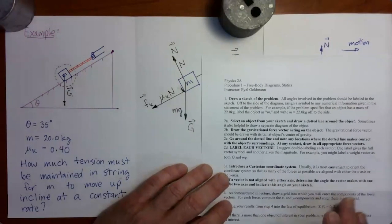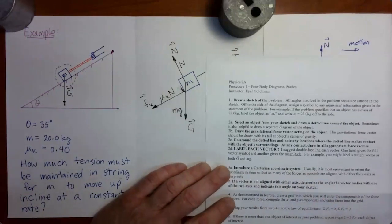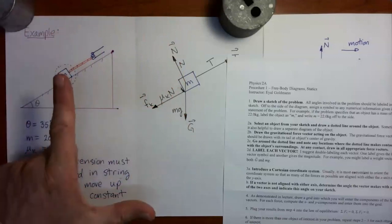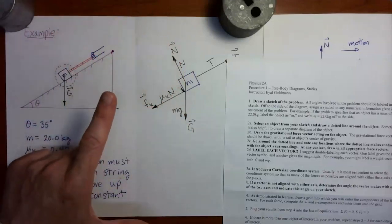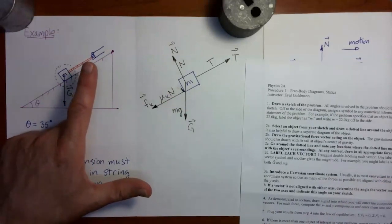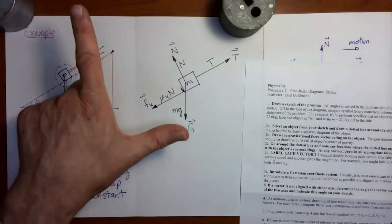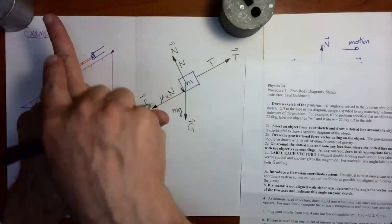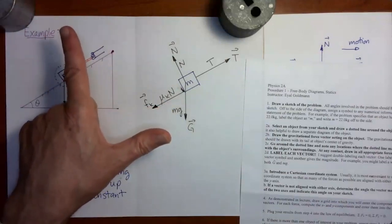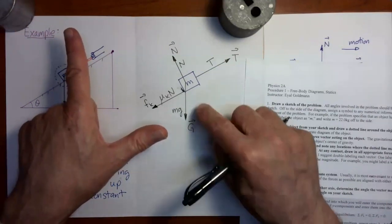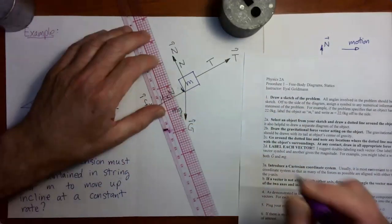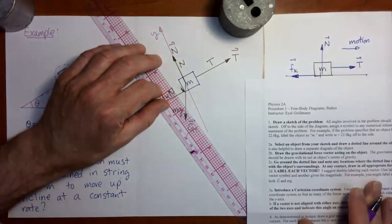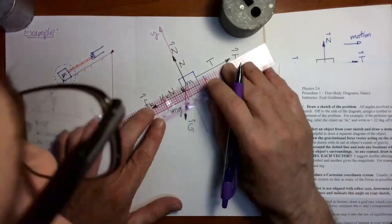Moving on to step 3: introduce a Cartesian coordinate system, meaning we want to put in x and y axes. Remember that we can rotate our x and y axes. The idea is to orient the axes so that as many vectors as possible line up with one axis or the other. If I orient my x axis along the incline and the y axis perpendicular to the incline, then three of the four force vectors line up with an axis — the only one which doesn't is the gravitational force. So I'm going to put in the y axis perpendicular to the incline and the x axis parallel to the incline.